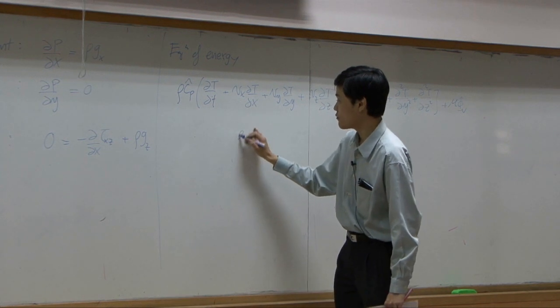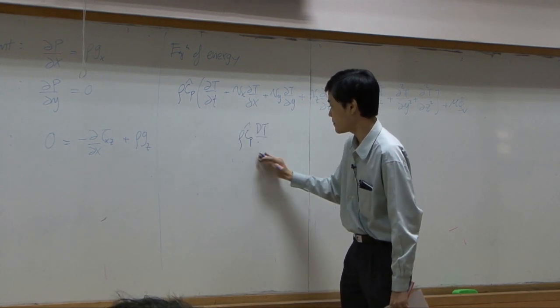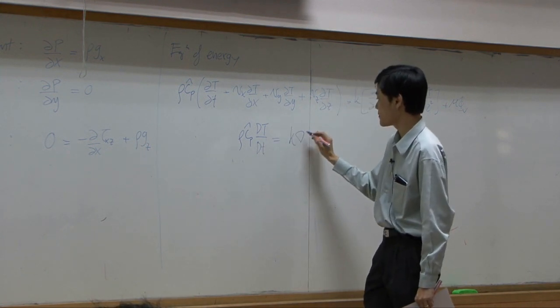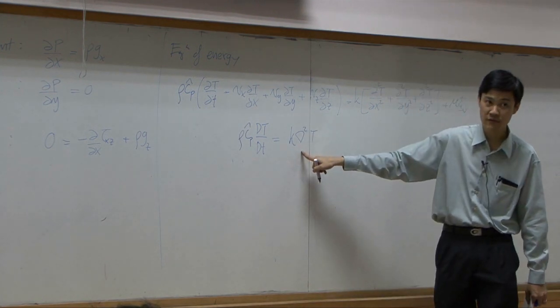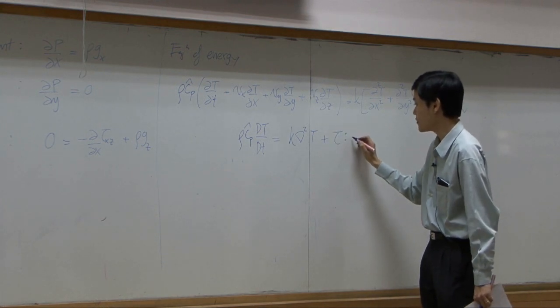You should go back to rho CP dT by dt equals K Laplacian T. This is Fourier's law, has nothing to do with Newtonian fluid, and then plus tau dot double dot V.